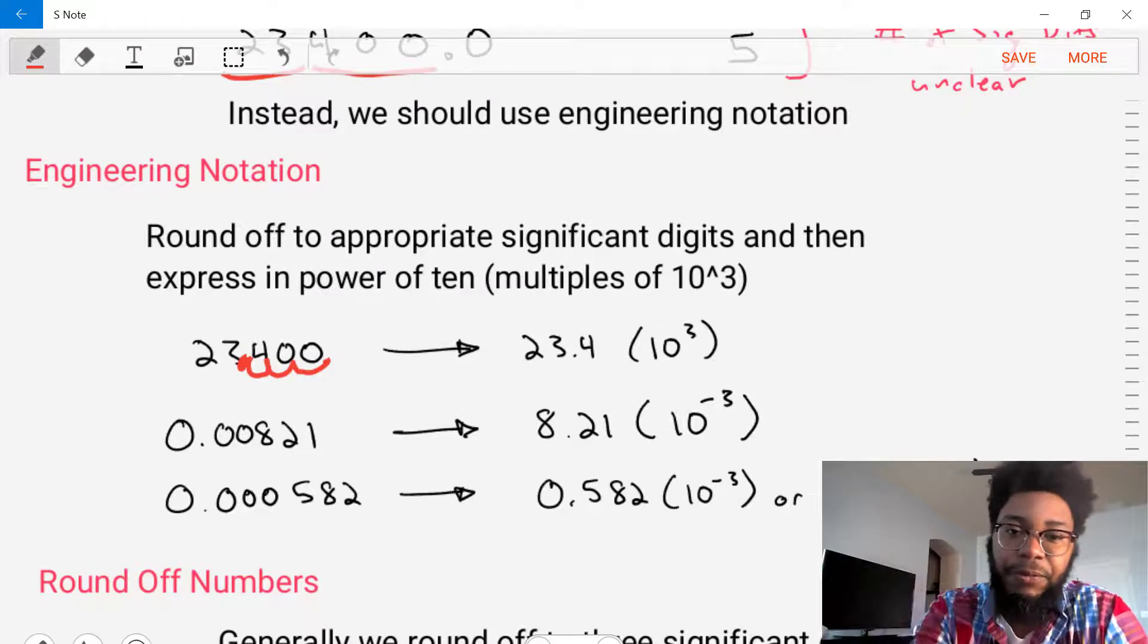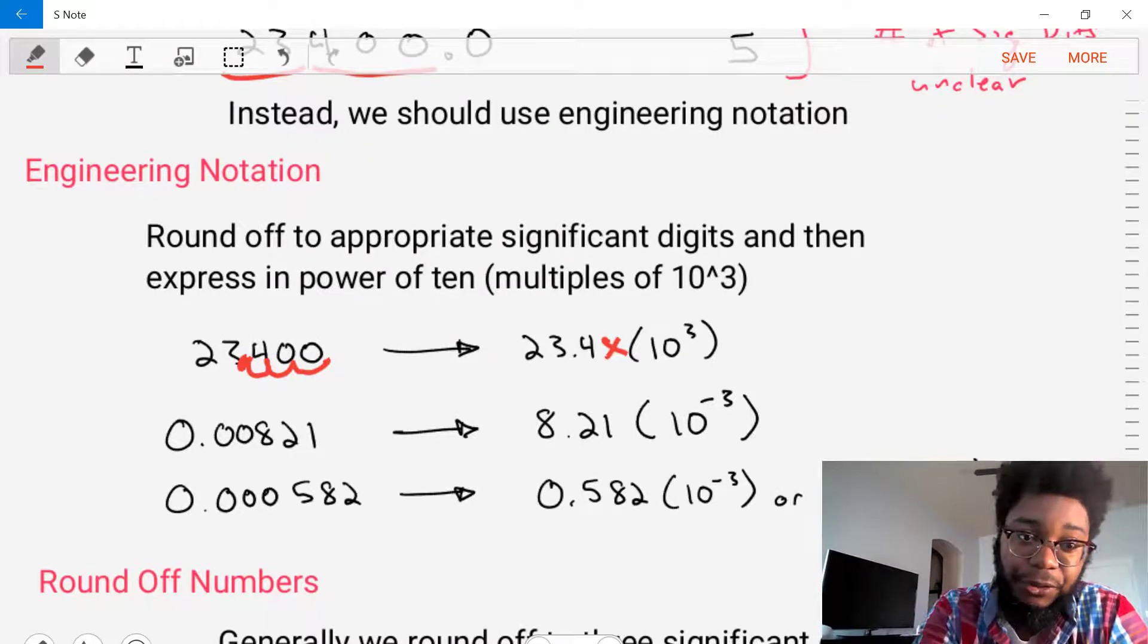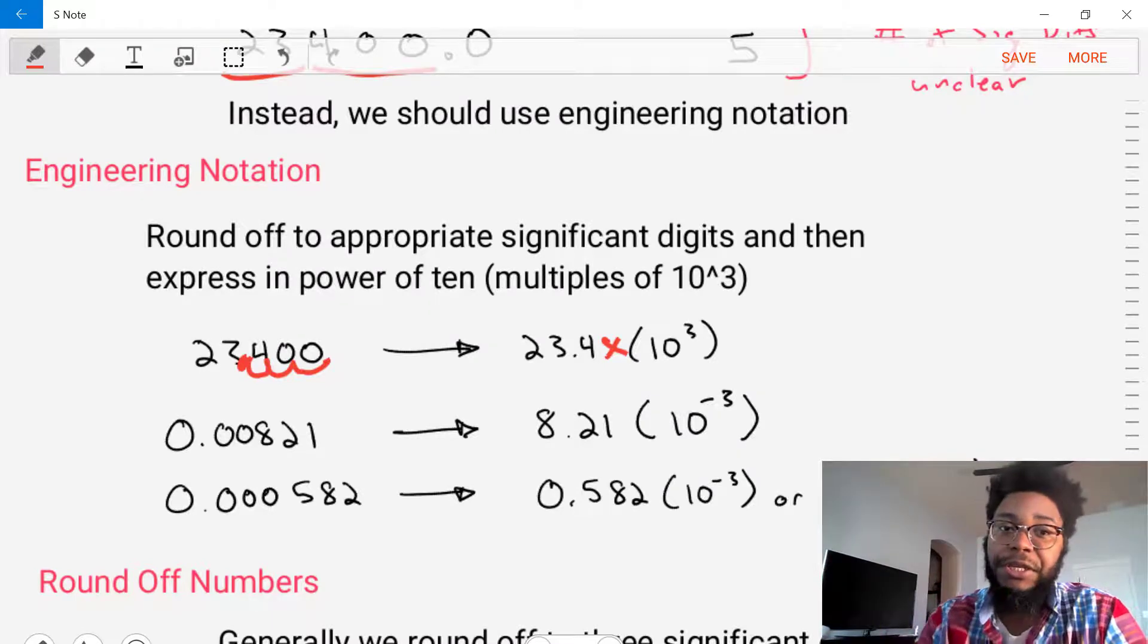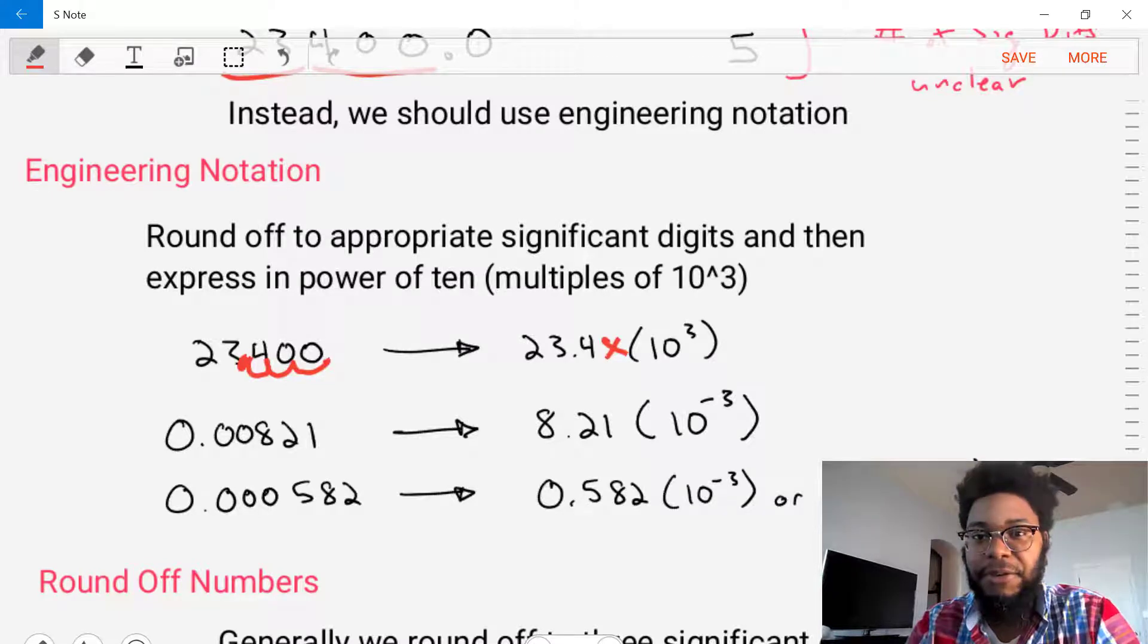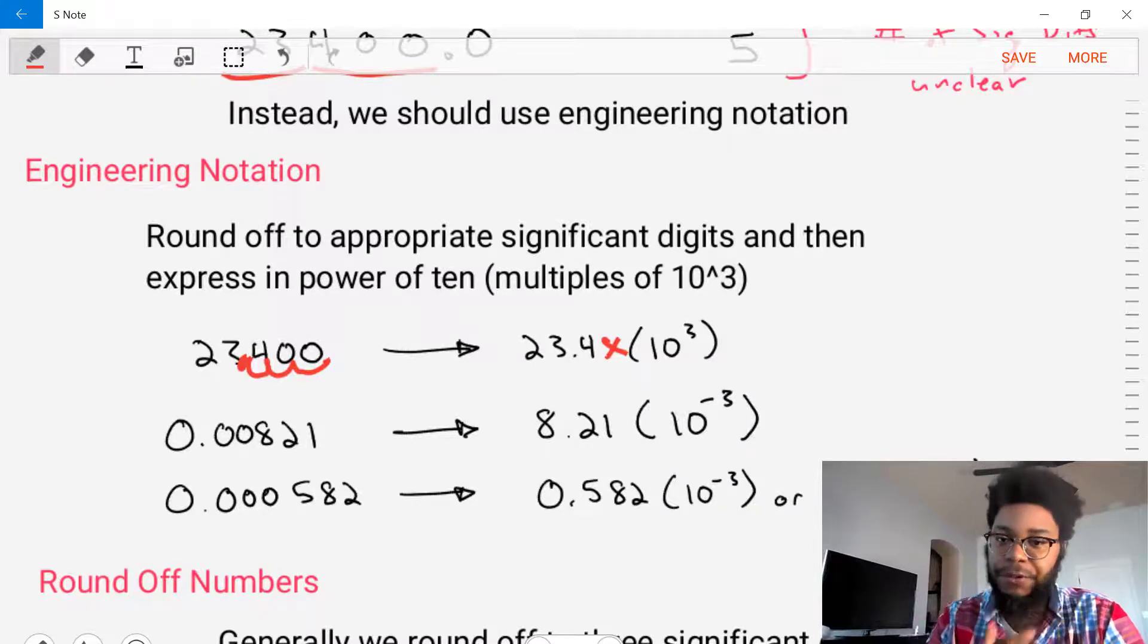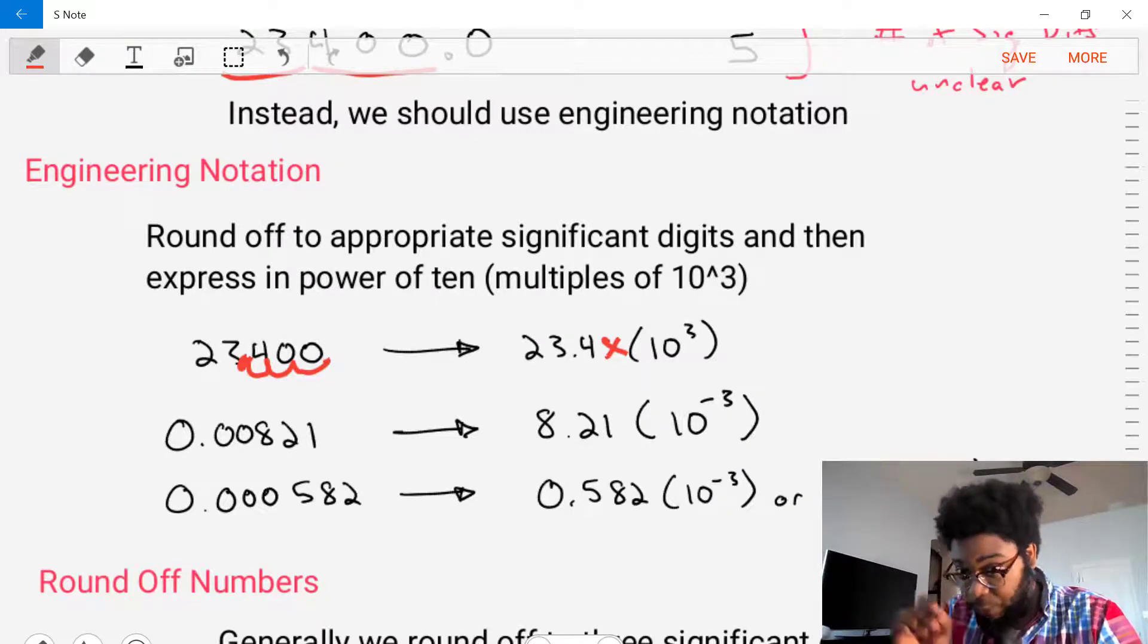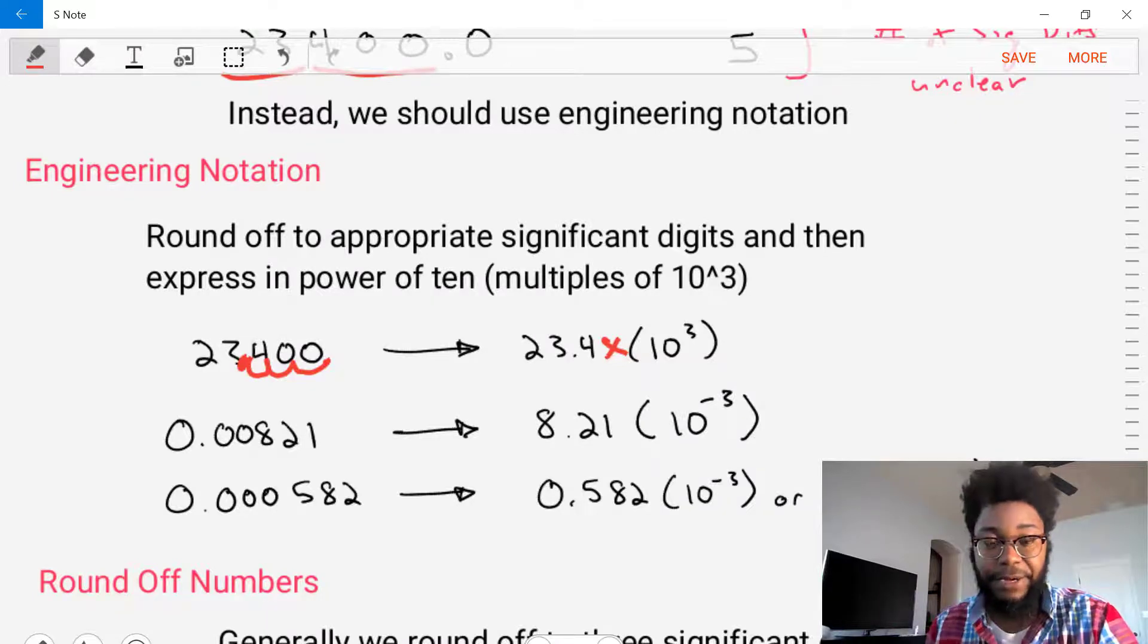Now we have this number 23.4. Well, if we take 23.4 and then we multiply it by 10 to the three, we took three steps: one, two, three, so times 10 to the three, we end up with the engineering notation for that value. So it's that straightforward, just moving the decimal point by each movement is one multiple of 10.